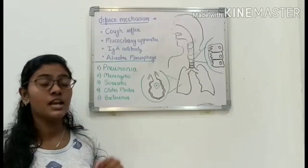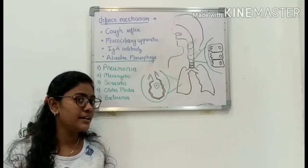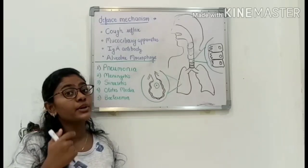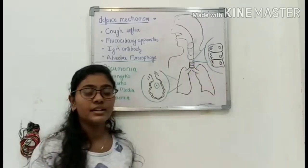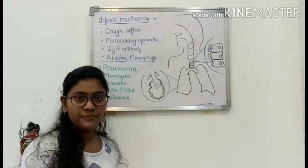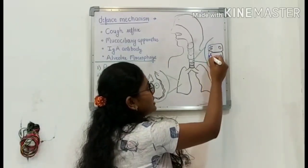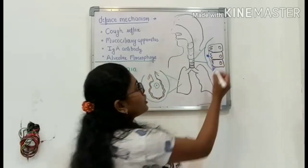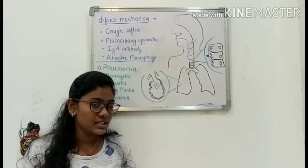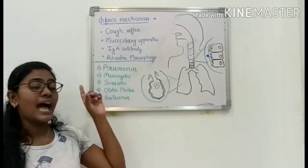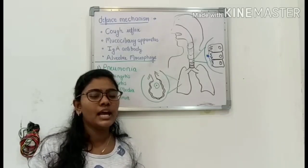Let's see what the defense mechanisms of the body are. First is the cough reflex — whenever bacteria enters our body, through coughing we try to remove the bacteria out of the respiratory tract. Second is the mucociliary apparatus. The upper respiratory tract is lined by ciliated columnar epithelium with a mucus layer. Bacteria get trapped in this mucus layer and by the ciliary action they are moved out. Also the body produces IgA antibodies against this bacteria, and alveolar macrophages in the alveoli cause phagocytosis and kill the bacteria to prevent infection.